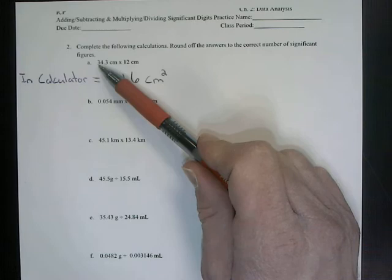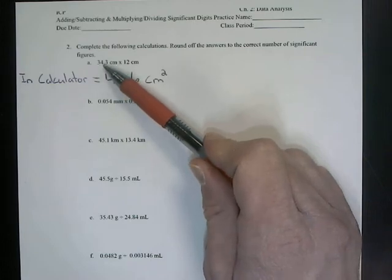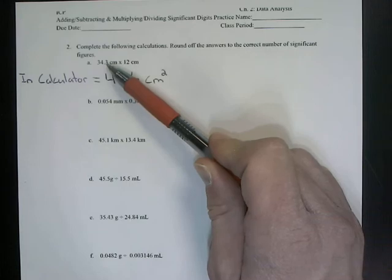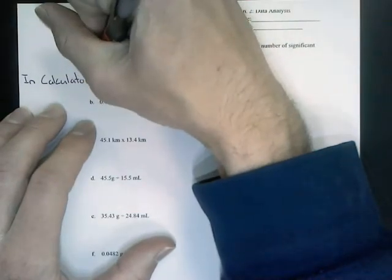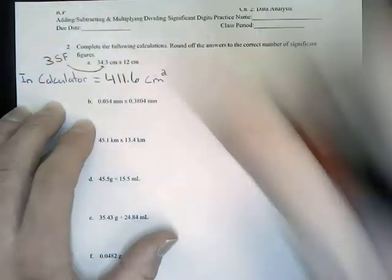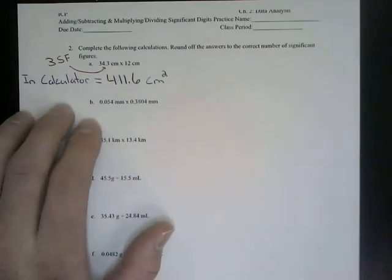We ask ourselves, is a 3 a non-zero number? Yes. That counts. Is a 4 non-zero? Yes. Is a 3 non-zero? Yes. All of these count as significant digits. So right here with 34.3, we have three significant figures or significant digits.